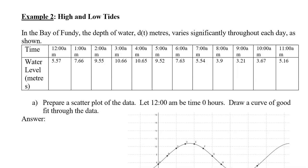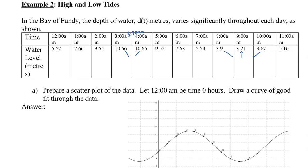So let's look at one more example that now gives you a table of values instead of a graph, and how you get from the table of values to a graph to an equation. So this says in the Bay of Fundy, the depth of water d of t in meters varies significantly throughout each day as shown. The time at midnight is 5.57 meters. And then you can see the highest it gets up to is about 10.66 meters at 3am. However, notice something here, and we're going to graph it to see in a minute. These are almost the same, meaning that at 3:30, that is actually when it gets to its maximum water depth.